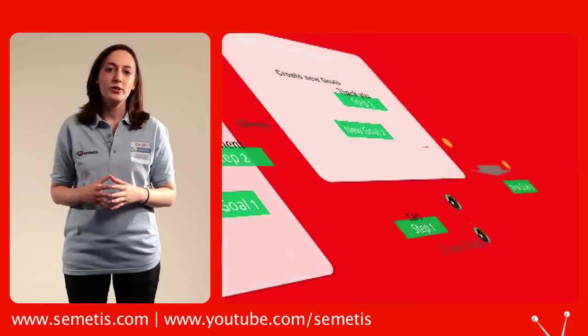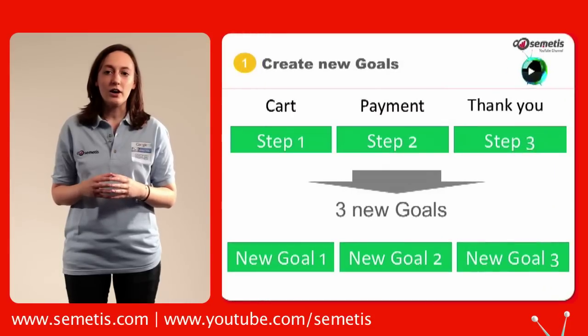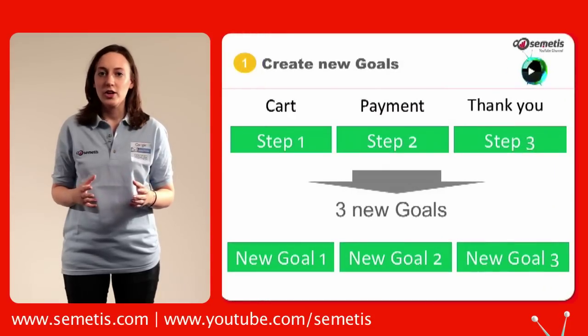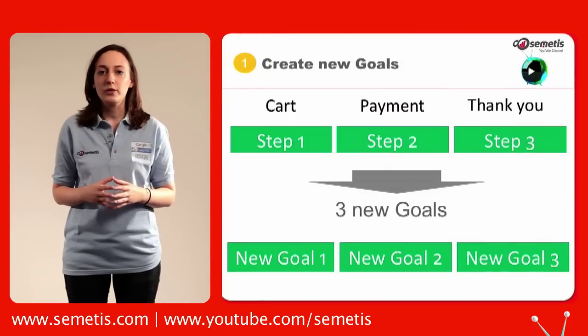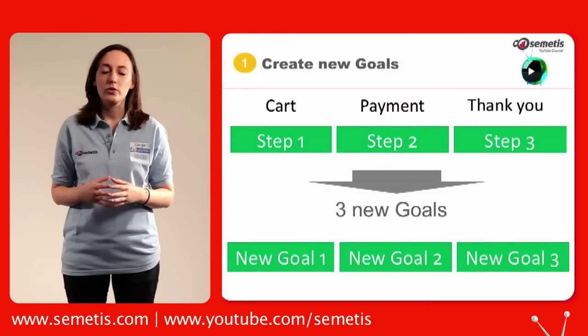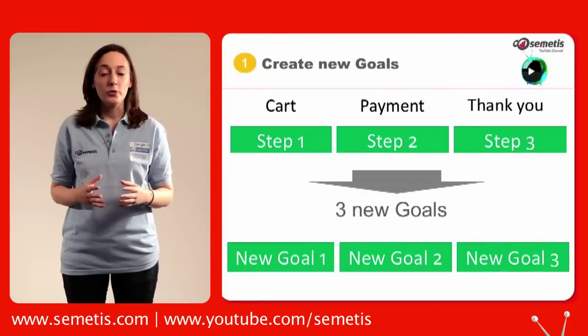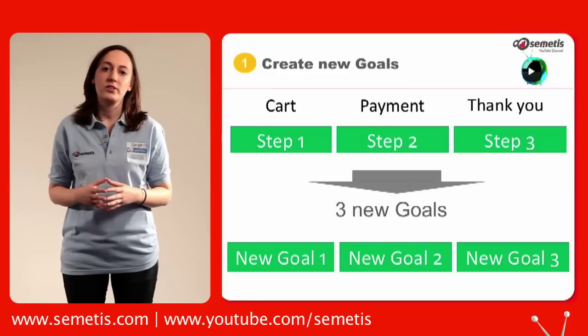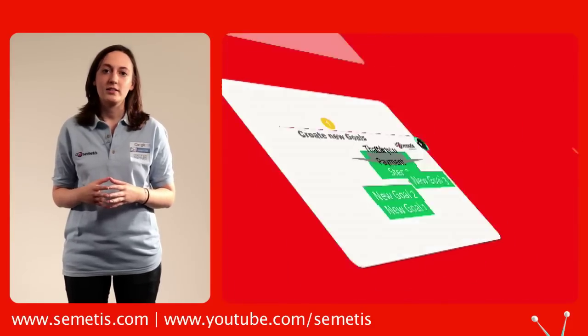Let's say you have a three-step funnel: cart, payment, and thank you page. You then have to create three new goals. Remember that you have a set of 20 goals available within Google Analytics.